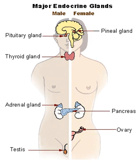The word endocrine derives via New Latin from the Greek words endon, meaning inside or within, and crine, from crino, meaning to separate or distinguish.